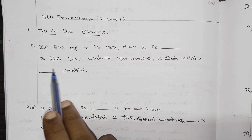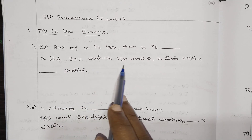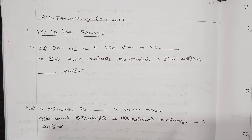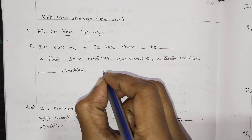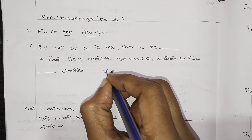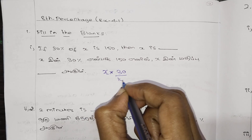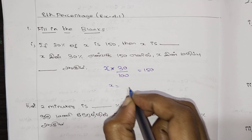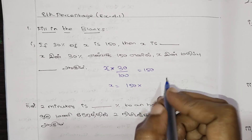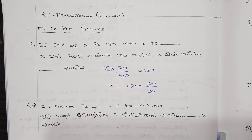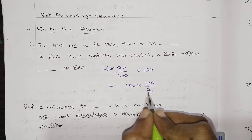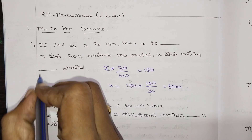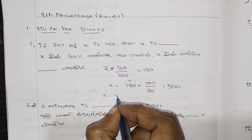We need to find X where 30% of X is 150. So 30 by 100 into X equals 150. We get X equal to 150 into 100 by 30. Simplifying: 150 divided by 30 is 5, and 5 into 100 gives us 500.